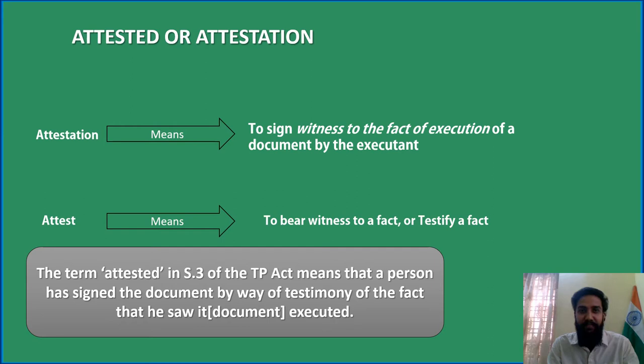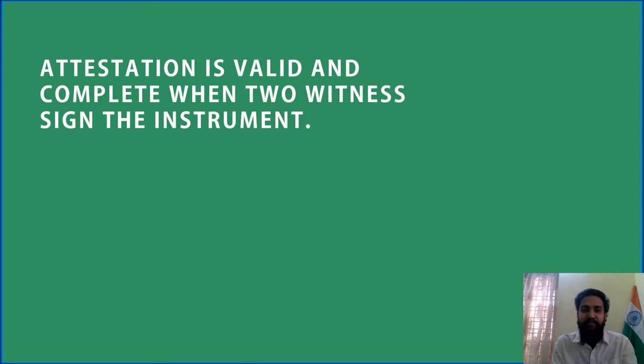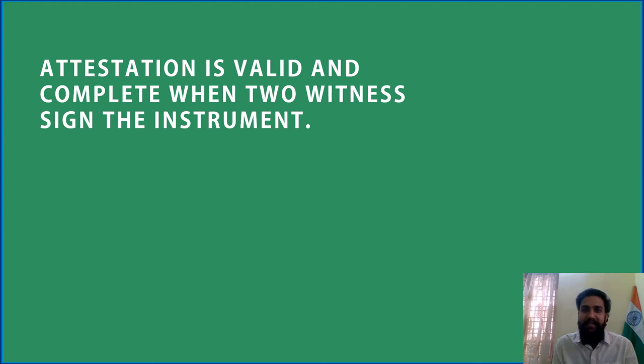Attestation is valid and complete when two witnesses sign the instrument. The instrument is the stamp paper that you use to transfer your property, and the witness is the two persons who saw that the owner has signed that stamp paper. It is a valid document for everybody else to show that the title of ownership of the property belongs to whom. The entire process has to happen in order to make sure that the property title is established.